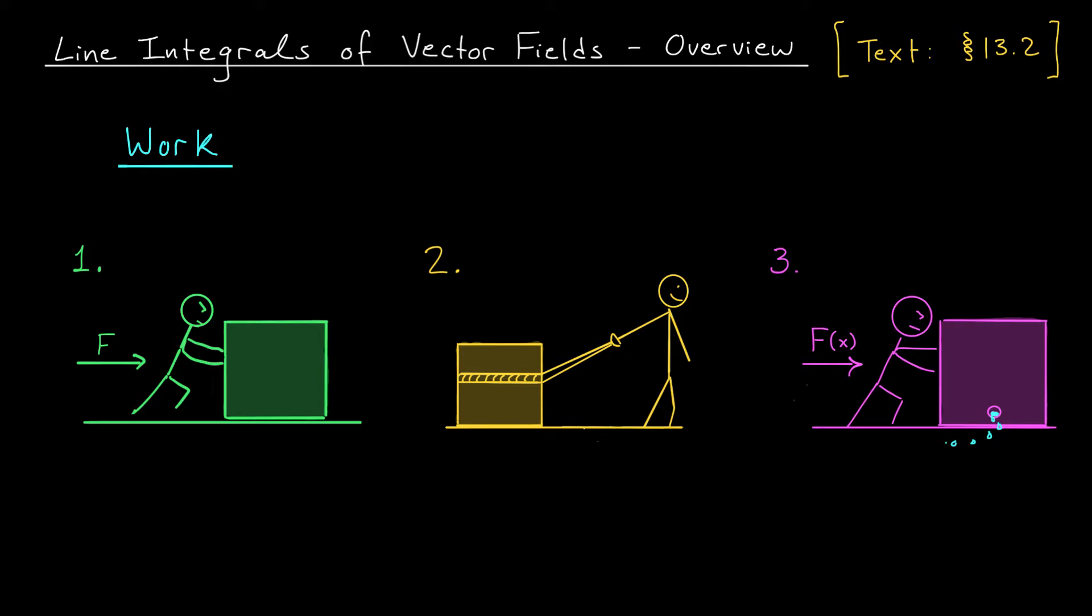If you've taken a physics course in the past, you've likely talked about work. In physics, work is defined as the force applied to an object times the distance over which that force is applied. So at the most basic level, if I'm trying to push a box across the floor and I'm exerting a constant force on the box, then the work I do is that force times the distance the box travels. Work equals force times distance.